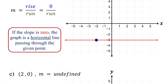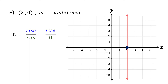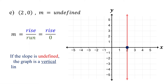But what happens if the slope is undefined? First, plot the point 2, 0. When the slope is undefined, the line is vertical. This means there is no run — the line doesn't go left or right. So, just draw a vertical line that passes through the point. In general, if the slope is undefined, the graph is a vertical line passing through the given point.